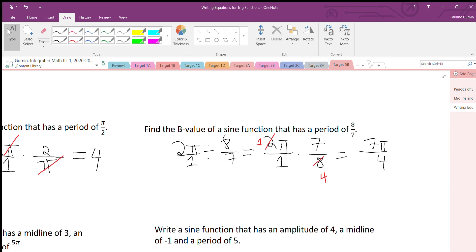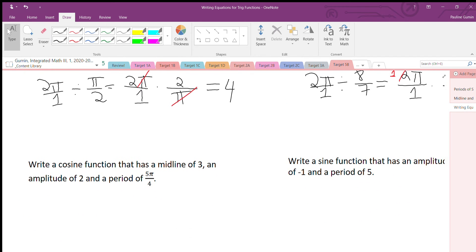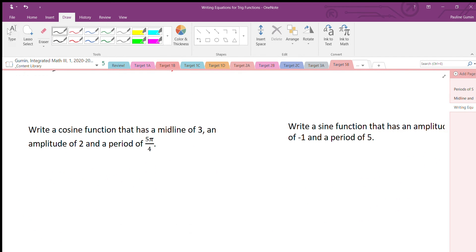Now, let's build some equations. So here I have, I want a cosine function, midline 3, amplitude 2, period 5π over 4. Alright. First things first, I'm going to write out my generic equation.